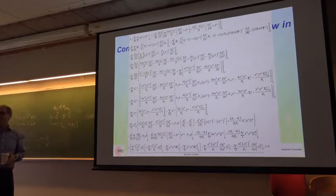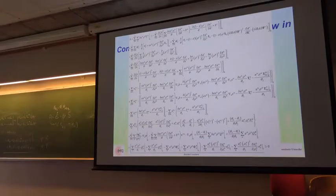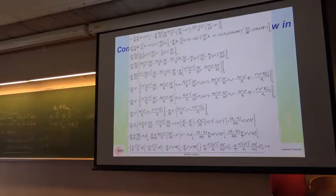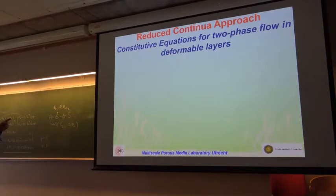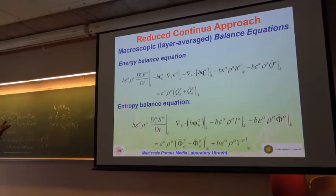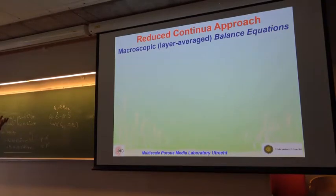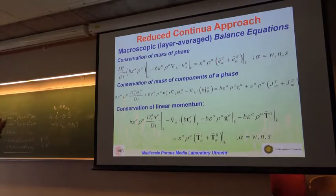In the very first equation, there are two sigmas—one for layers and one for phases. The model is developed for two layers, because once you establish the exchange between two layers, it generalizes to any number of layers.